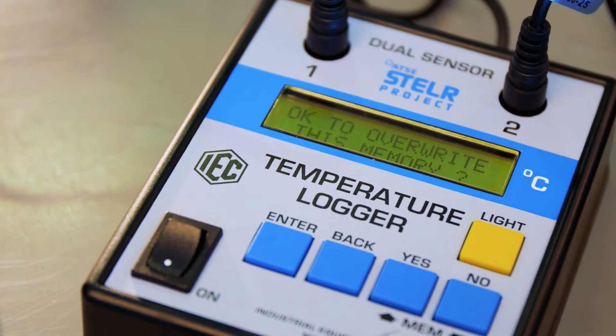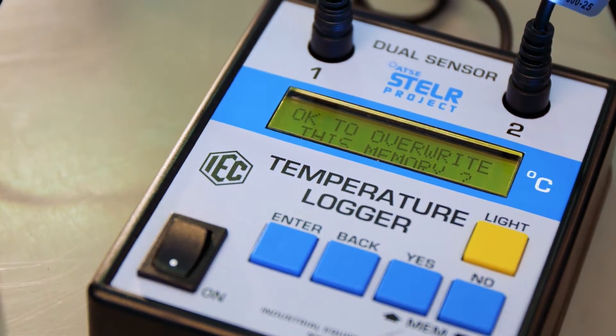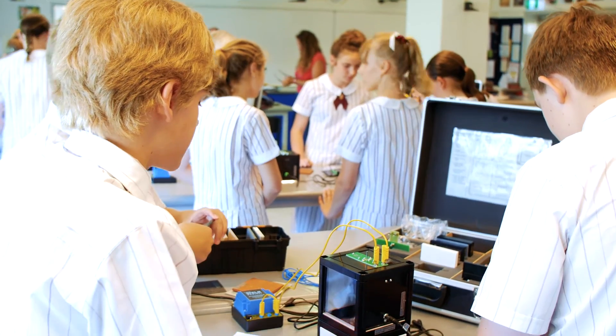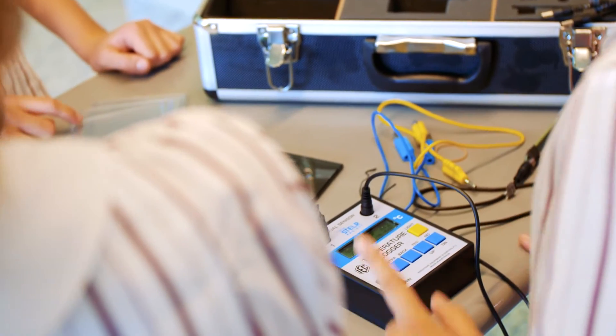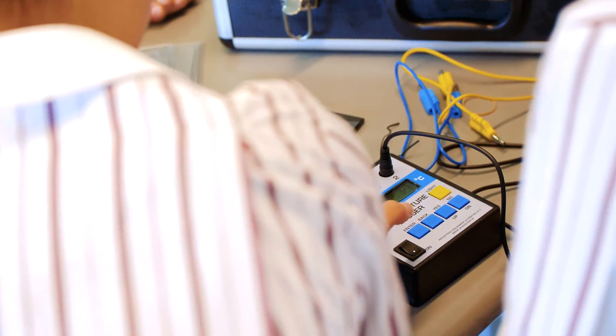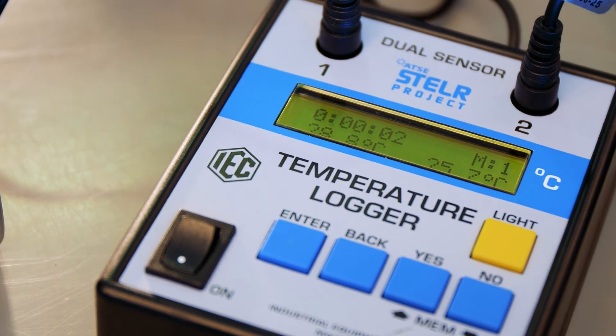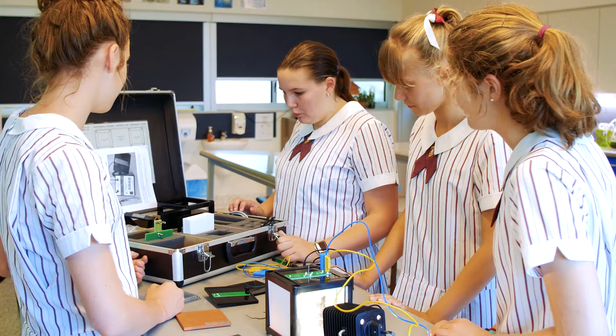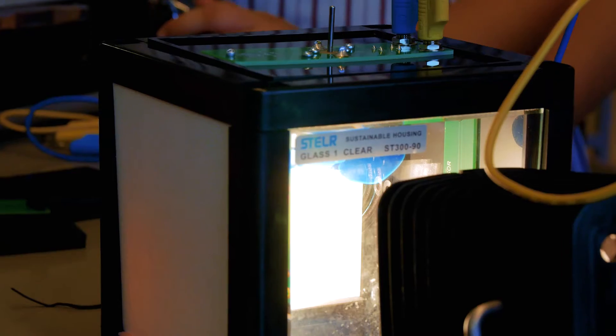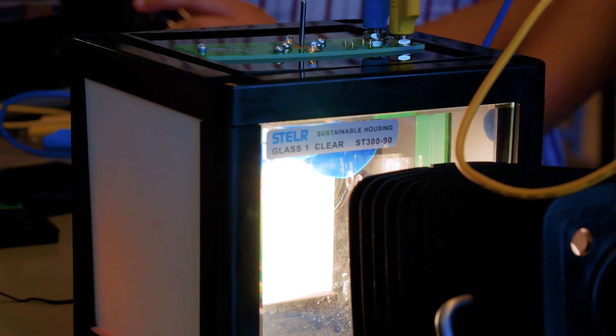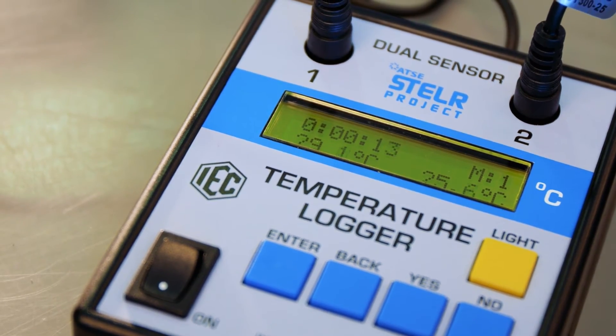Now it says okay to overwrite this memory. As soon as I press yes that memory will be overwritten and we'll start recording the temperatures. So I'm going to press yes and we can see that the temperature inside the room is 28.8 degrees Celsius and the temperature outside is fluctuating between 25.6 and 25.7.